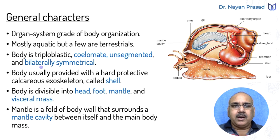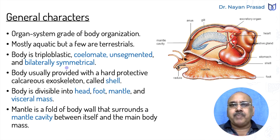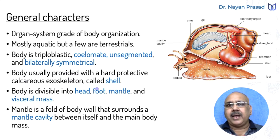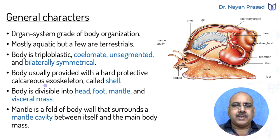They have a bilaterally symmetrical body. In some cases, due to torsion, the body becomes asymmetrical — we shall see that later. But most individuals have a bilaterally symmetrical body. The body is usually provided with a hard protective calcareous exoskeleton — the shell — made up of calcium carbonate, providing an outer protective covering, hence called a calcareous exoskeleton.